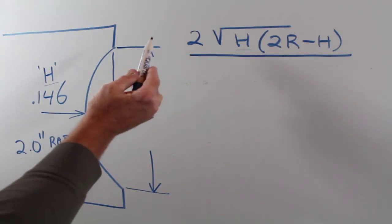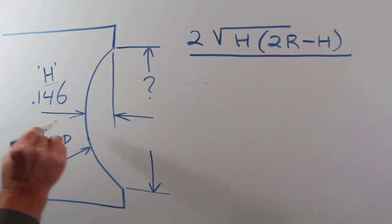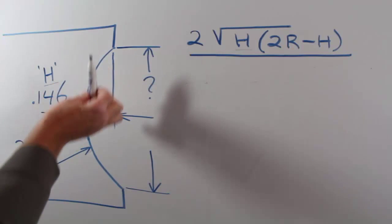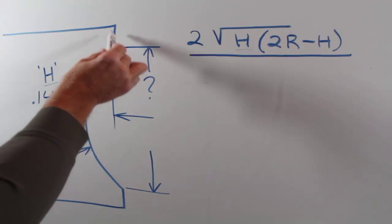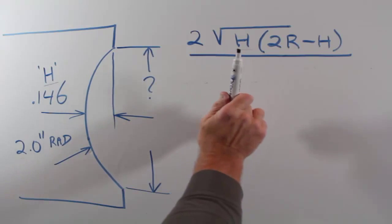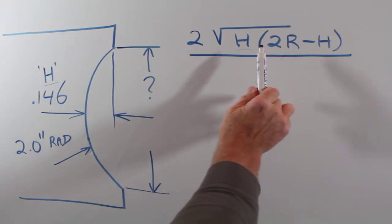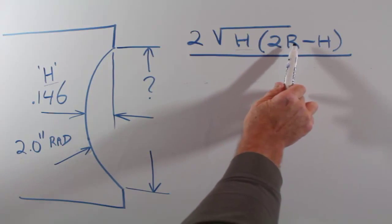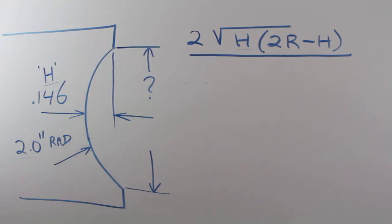For this example, we're going to be machining a concave radius of two inches, and at the deepest point in the middle we're going to be 0.146 inches from the face. We need to calculate the diameter where the radius intersects the face of the part. The formula we're going to use is: two times the square root of h — where h is that 0.146" depth — multiplied by two times the radius r (two inches), minus 0.146.